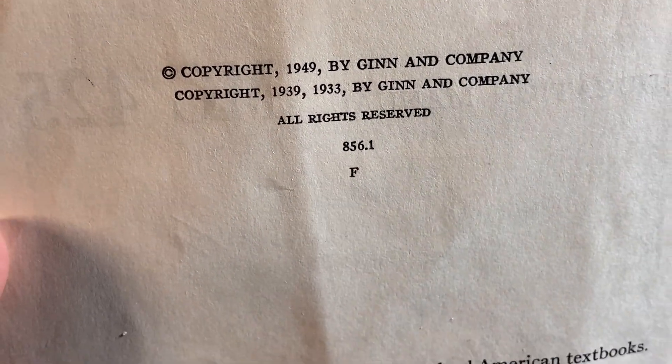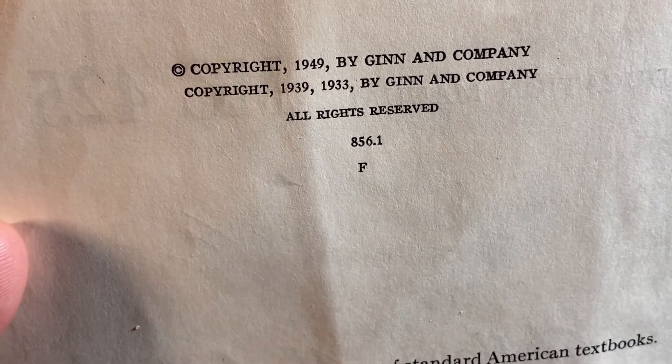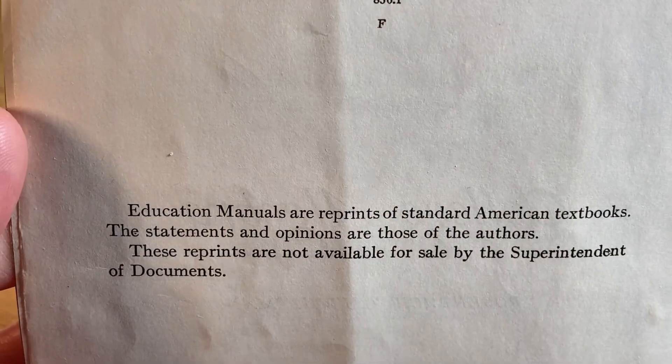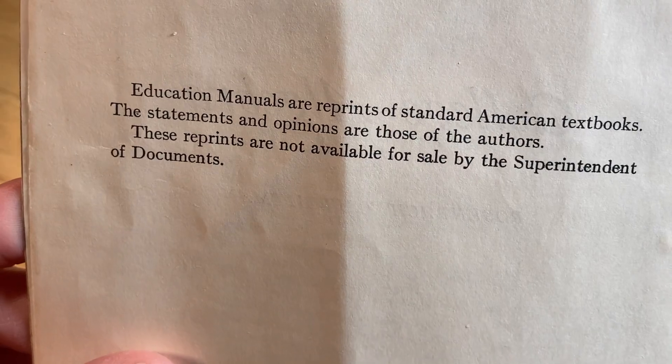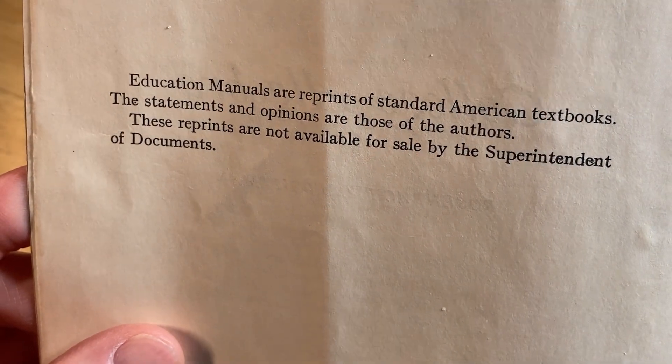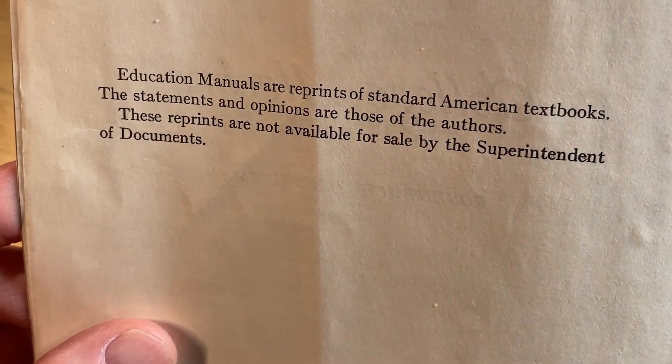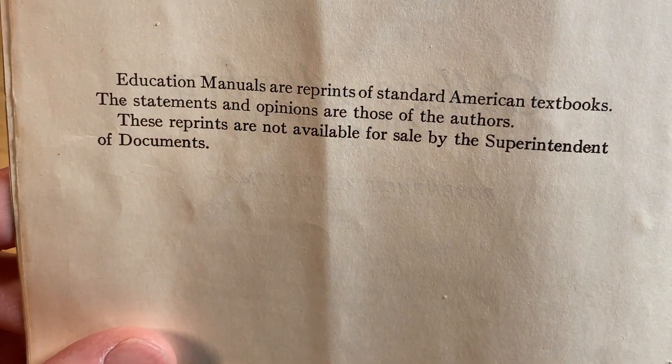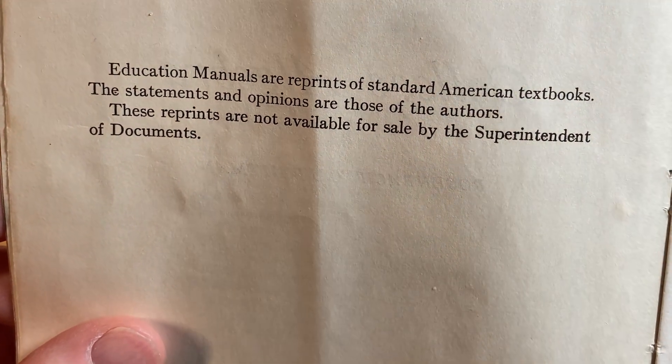Here's the copyrights. You can see the first one, 1933. Wow, was that during the depression? I think it might have been. Education manuals are reprints of standard American textbooks. The statements and opinions are those of the authors. These reprints are not available for sale by the superintendent of documents. I'm just gonna give it a whiff here.